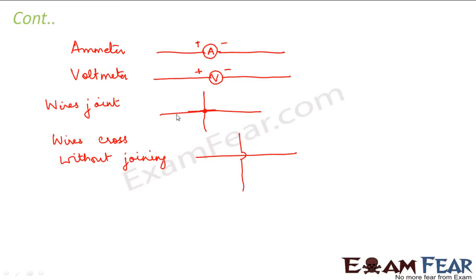So when we draw circuit diagrams, all these conventions make a difference, because sometimes you first draw the circuit diagram and then actually make the circuit in your lab. Now let us see how a circuit looks taking all these elements into consideration. Suppose I have a circuit with a switch, a battery, a resistance, and a bulb connected together.